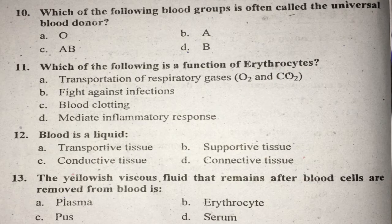Question number ten: Which of the following blood groups is often called the universal blood donor? Blood group O is called the universal blood donor group. This is the correct answer.